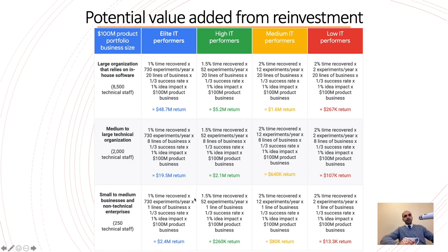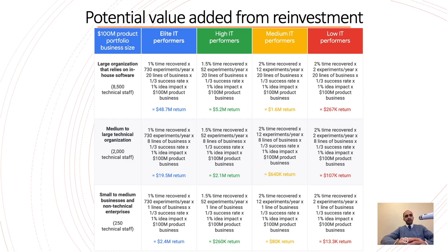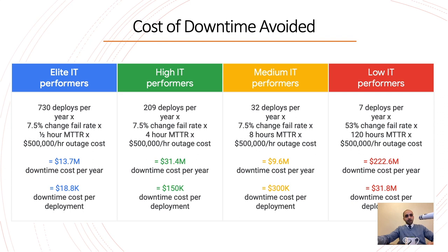For a small to medium business, let's say 1% of time recovered and the team is performing at elite level — that gives you 730 experiments per year with a one-third success rate. We can assume a 1% idea impact. For a startup with 250 technical staff, we probably shouldn't target a $100M product line since startups are still raising money, so let's use $50M as a more realistic figure. Cutting that in half to estimate conservatively, we arrive at about $1.2 million — still a significant amount.